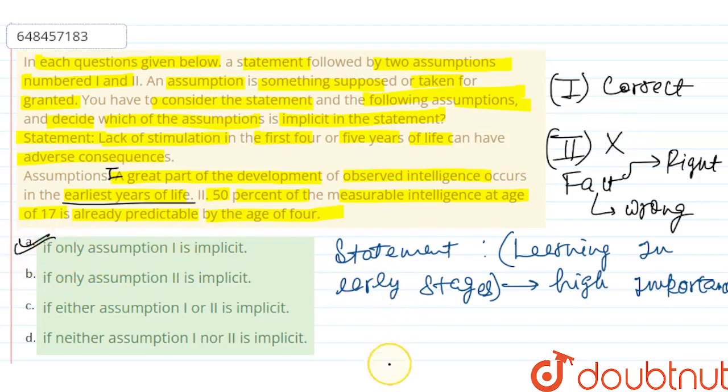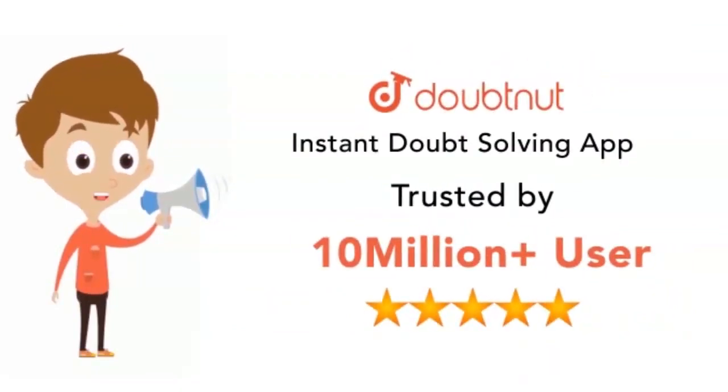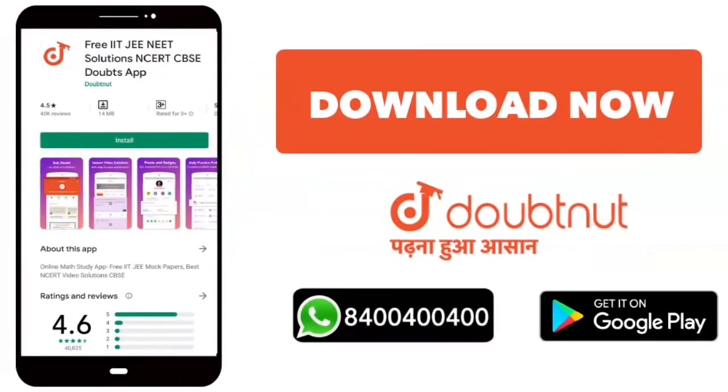So option A will be correct. Thank you. You can download the Doubtnet app or WhatsApp, click on 8400 404 super.